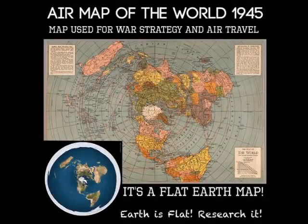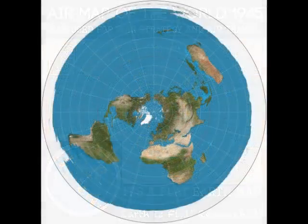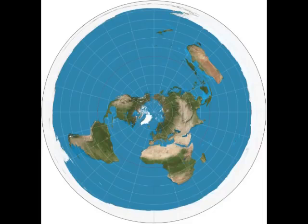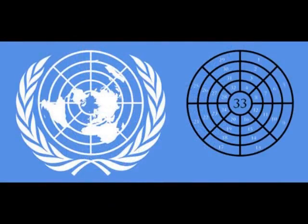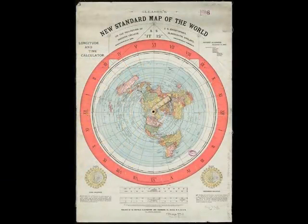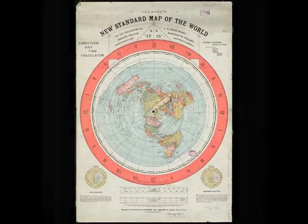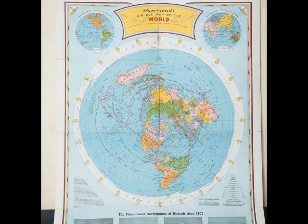The azimuthal equidistant projection map that the USGS actually uses is the flat earth map. The UN logo is another example of it — it's actually a flat earth map divided into 33 Masonic sections. You can just type in flat earth map on Google. It's a disk shape: the North Pole is in the center, and all the continents go out from there.